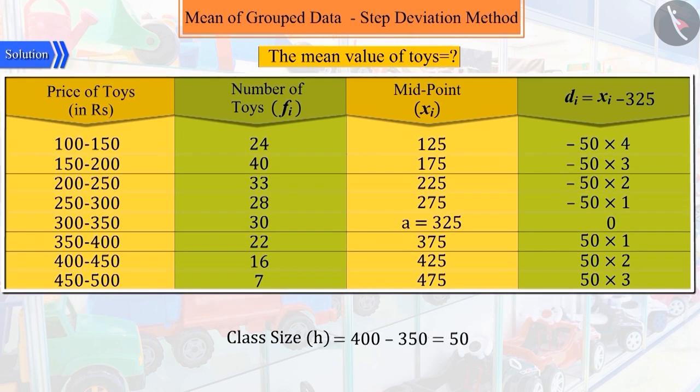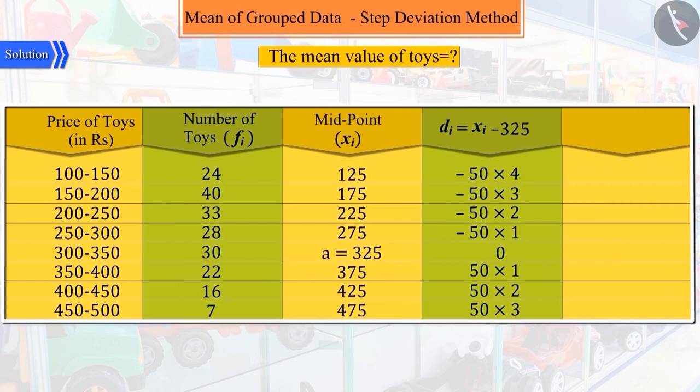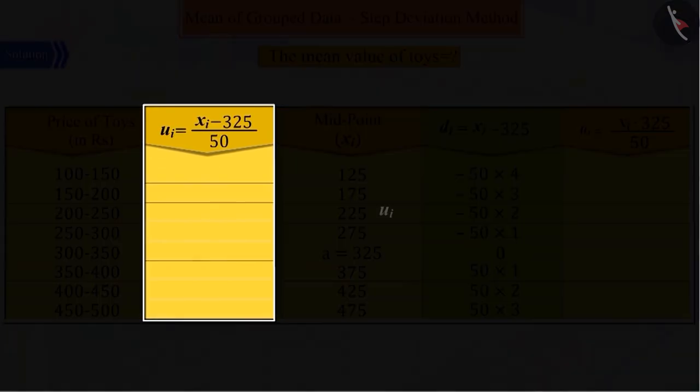Where 50 is the class size of each class interval, which we represent by small h. Suppose UI equals XI minus A by H, where A is the assumed mean and H is the class size.